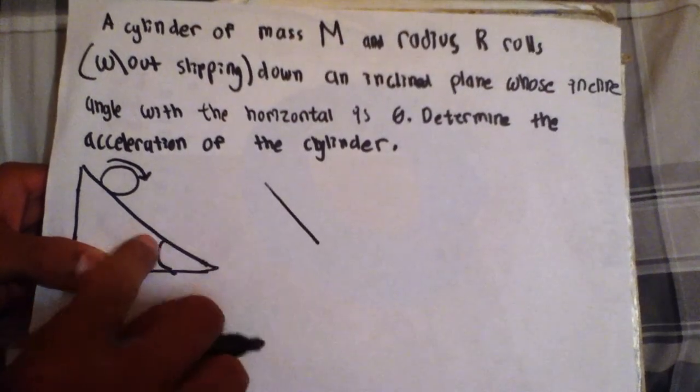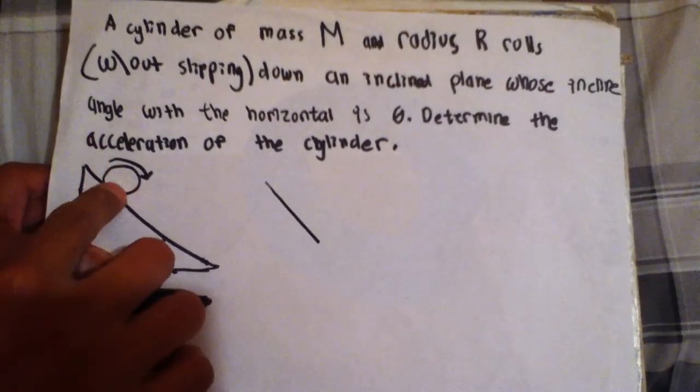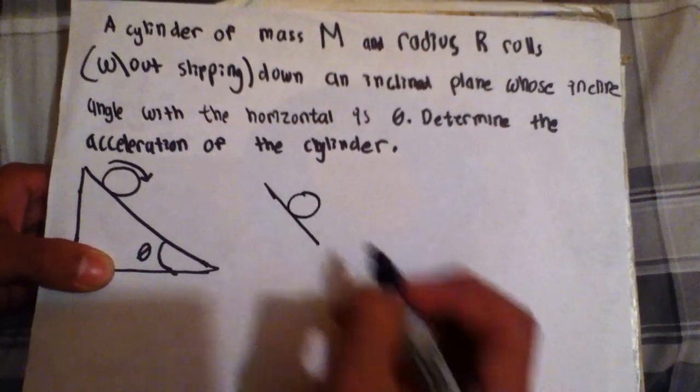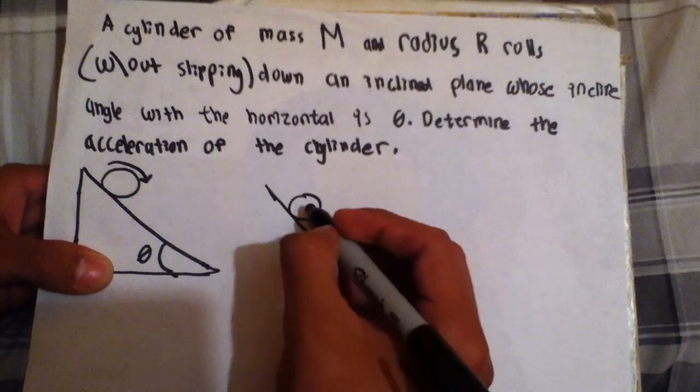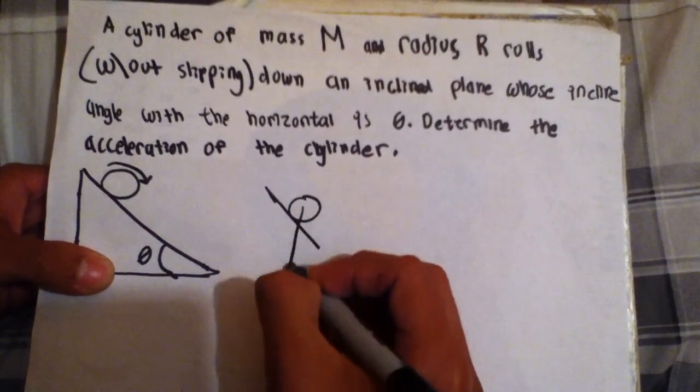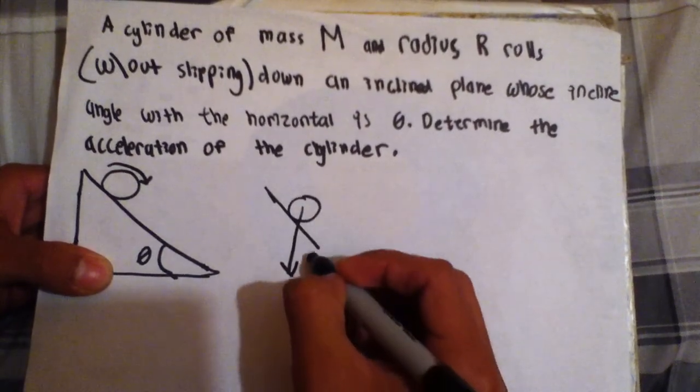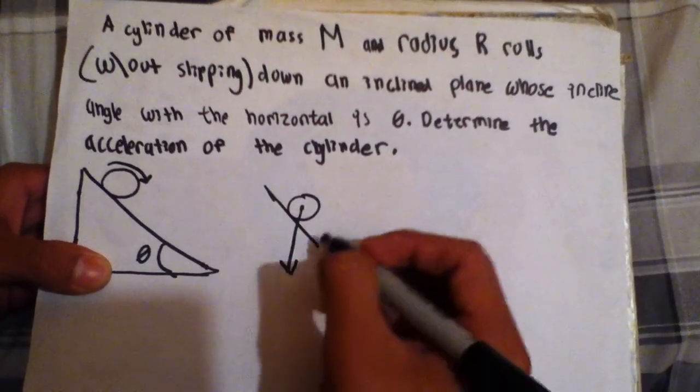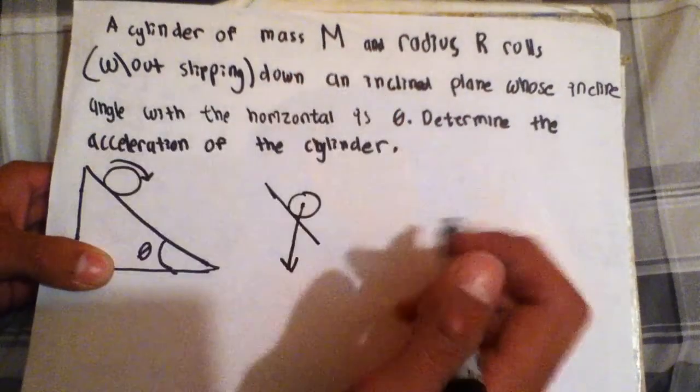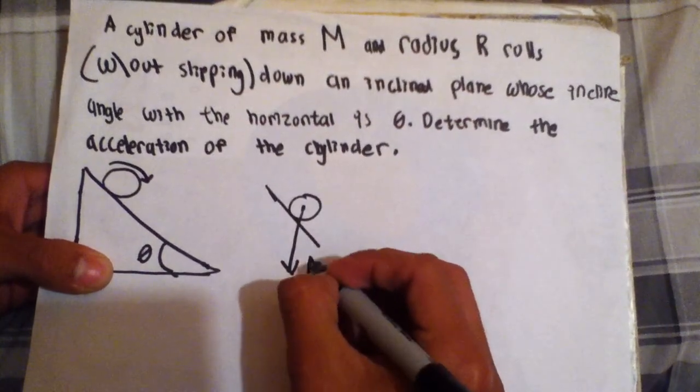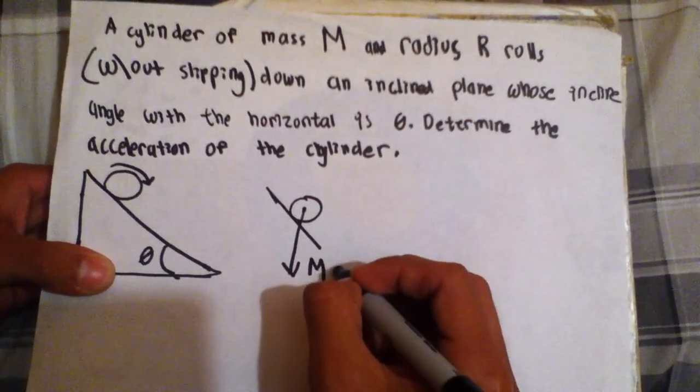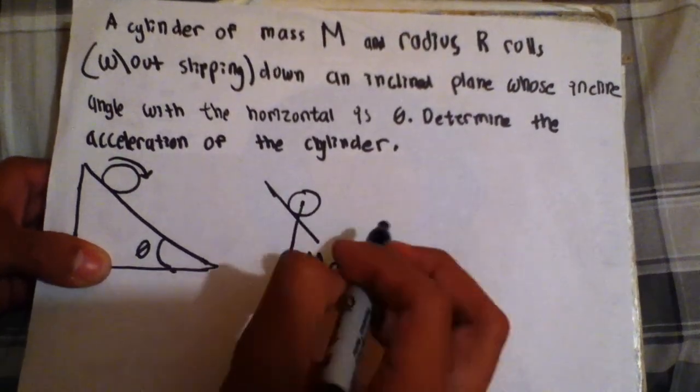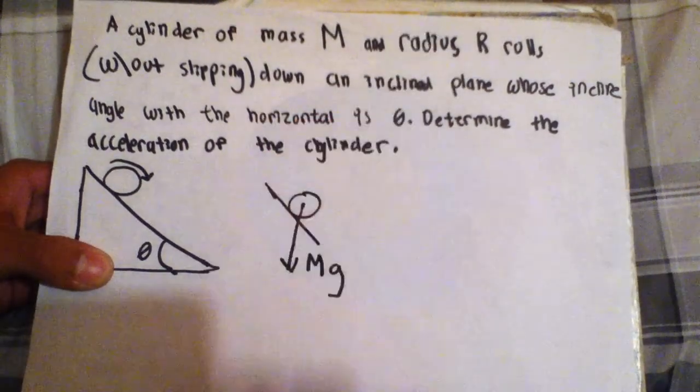So I'm going to draw a free body diagram of this cylinder right here. And first and foremost, there is this force due to gravity and the mass. So it has a mass M times G, which is gravity, of course. And then notice how gravity is always going straight down.